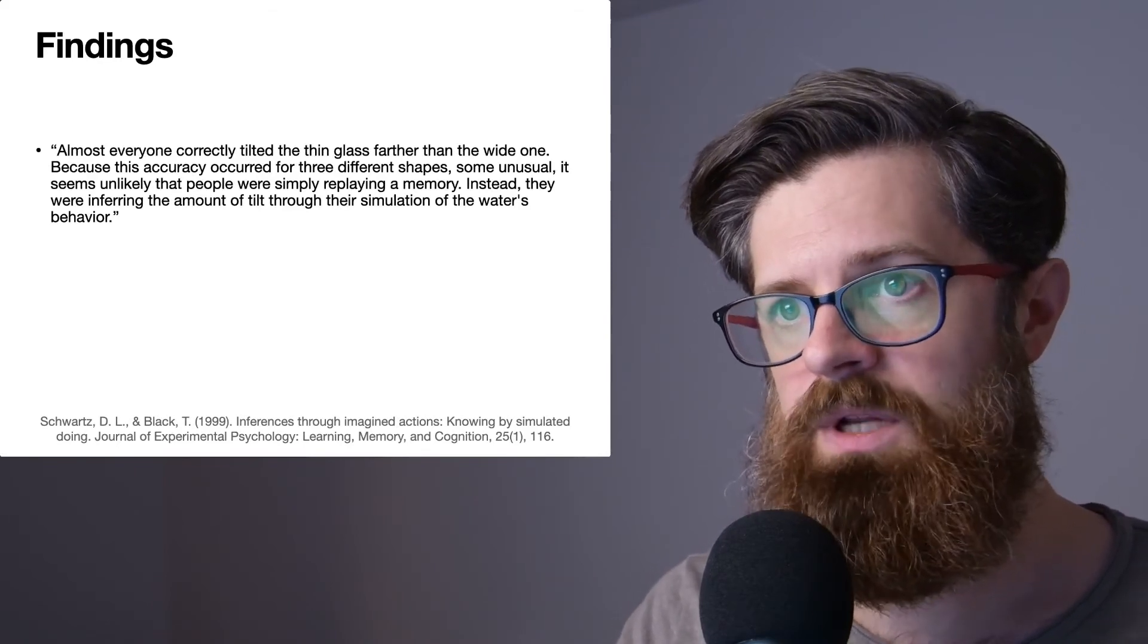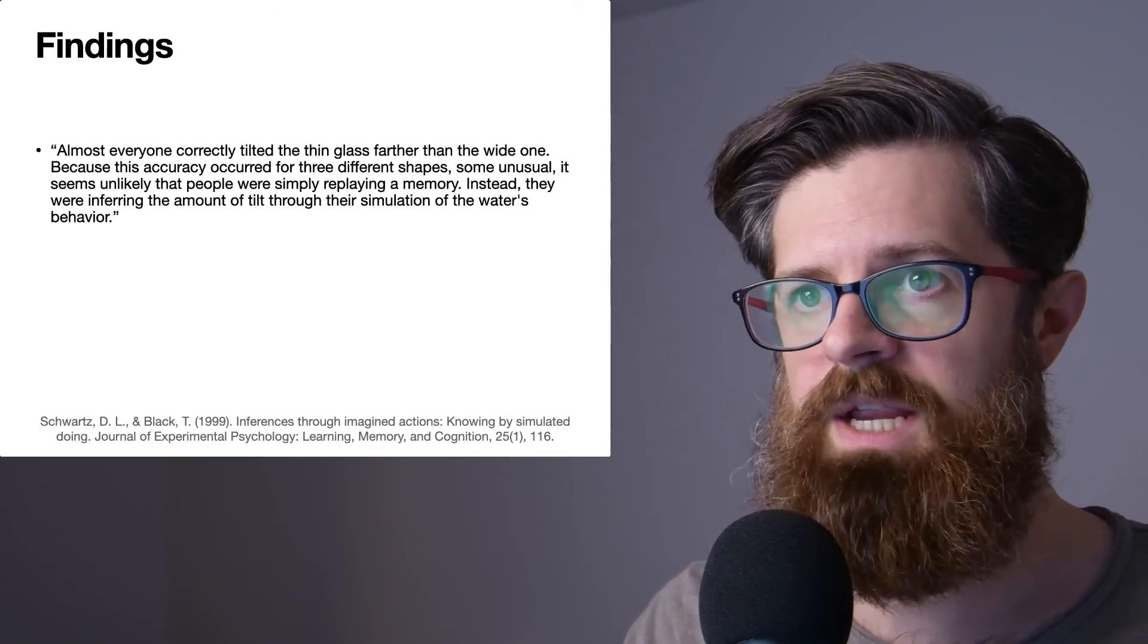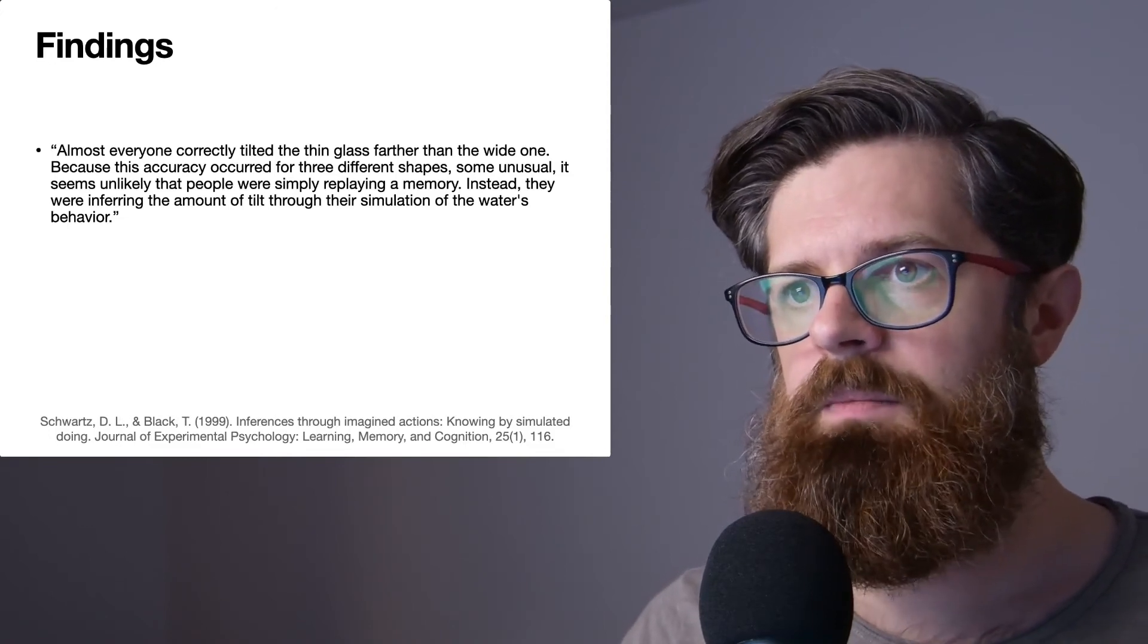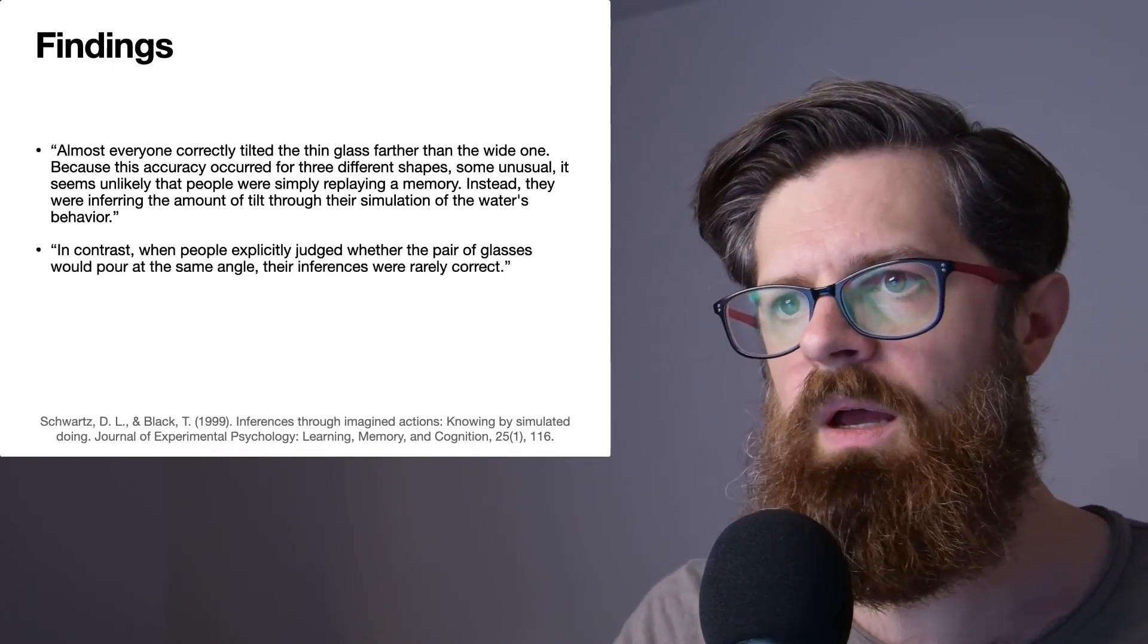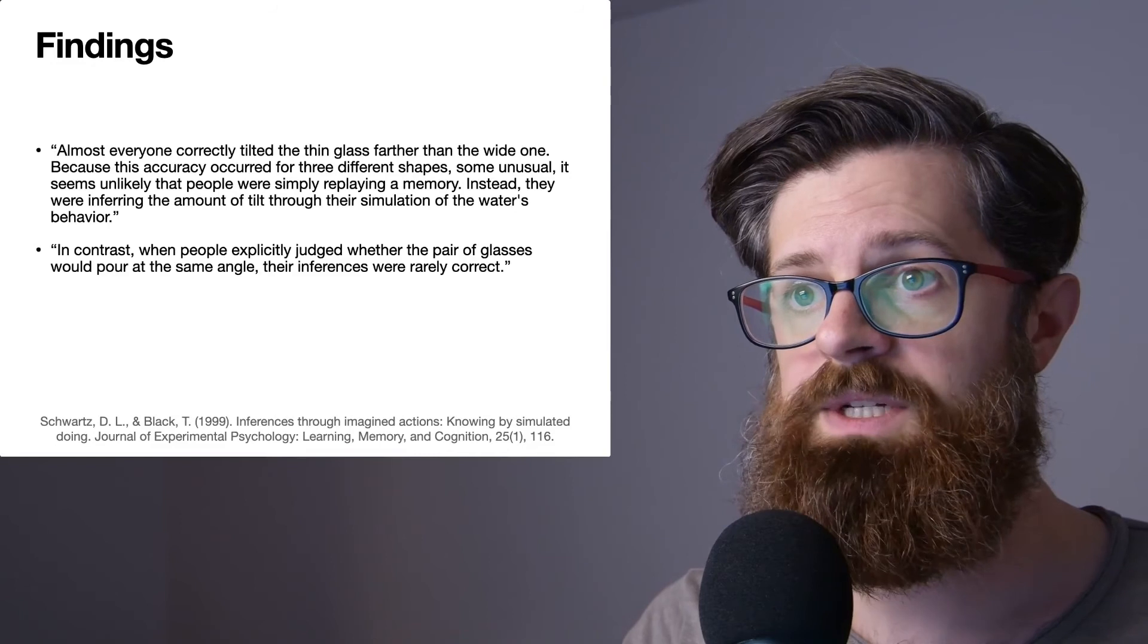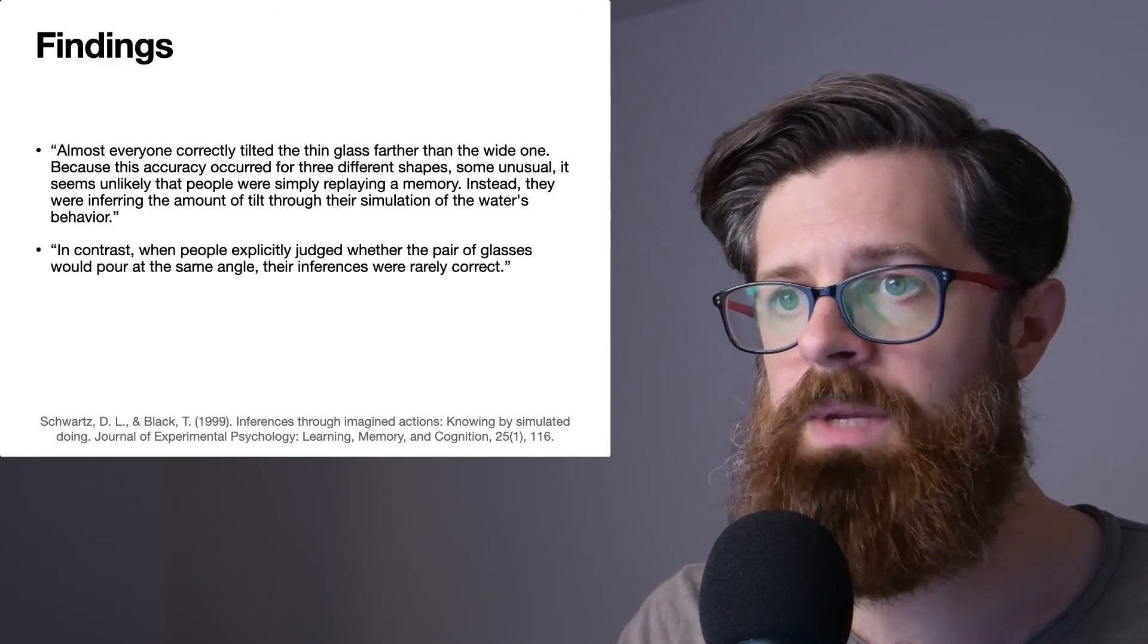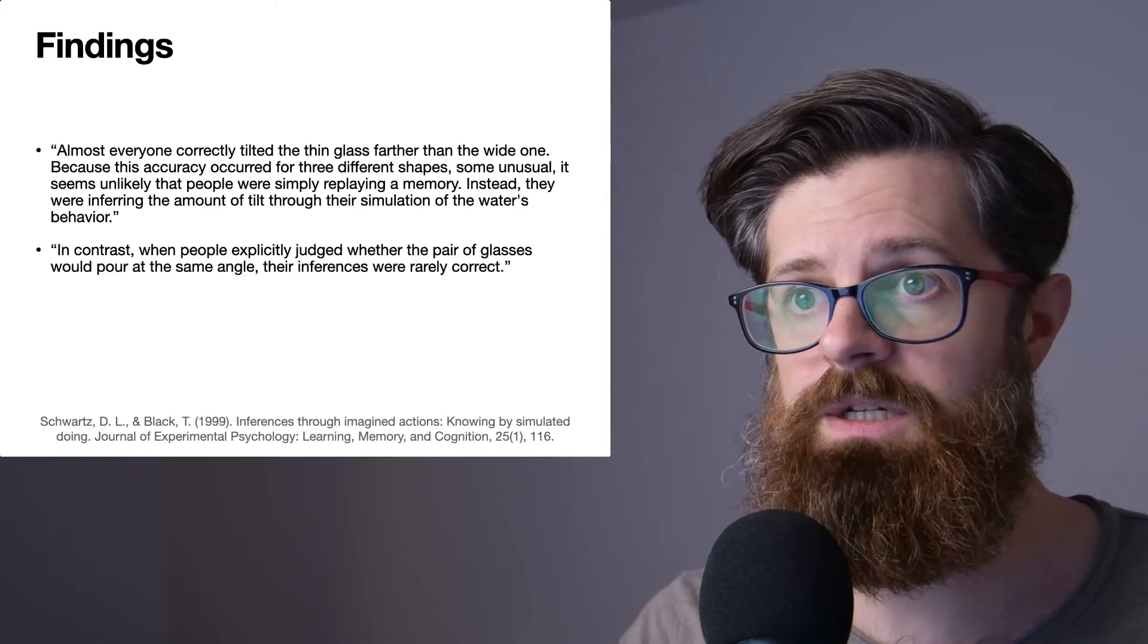Almost everyone correctly tilted the thin glass farther than the wide one. Because this accuracy occurred for three different shapes, some unusual, it seems unlikely that people were simply replaying a memory. That's quite a neat thing. Instead they were inferring the amount of tilt through their simulation of the water's behavior. In contrast, when people explicitly judged whether the pair of glasses would pour at the same angle, their inferences were rarely correct. So this is interesting. Now we're getting a dissociation in how accurate people's inferences and predictions are based upon the way in which they are asked to solve the problem.